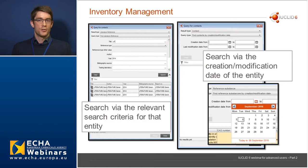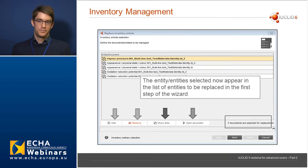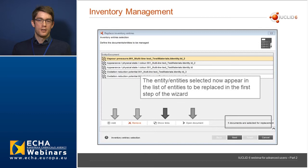You can replace more than one entity at a time — indeed, this is one of the essential uses of this feature. Once you've selected your entities they will appear in a list in the first step of the wizard. You can add more entities, remove entities, open the entity itself in the background screen of IUCLID by clicking 'open document', or see the various links these entities have in IUCLID by clicking 'show links'. This is important because here you can see all the different IUCLID relationships of that entity.